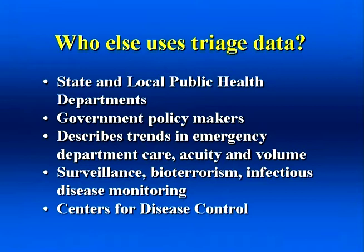Once integrated into your department, a good triage system will allow you to compare yourself to other departments or to yourself over a designated time period. So you can see a good triage system provides more data than just describing the volume you see in your department. Next we ask, who else uses our triage data? Many agencies use emergency department triage data. State and local health departments as well as government policy makers use our data to help identify trends in emergency department visits. Our triage data helps shape the need for public policy changes. In the current era of bioterrorism threats, real-time data can be used to help identify possible bioterrorism events — for example, a sudden increase in young, healthy, level 3 patients with respiratory complaints post-exposure at a public event could raise the suspicion of a possible terrorism event.